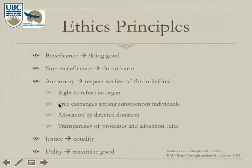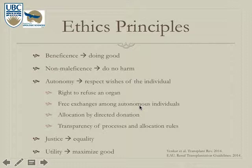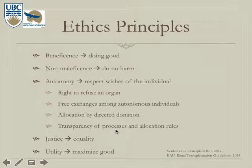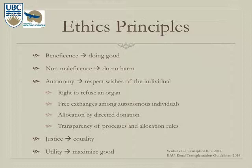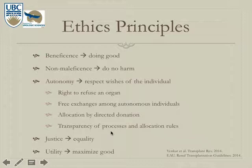Autonomy is a key principle, especially in living donation. Recipients can refuse an organ if they wish, and individuals can direct their donation to a specific person. Justice and autonomy sometimes conflict — society may prefer an organ go to a waitlist patient rather than a donor's chosen recipient, as justice requires equal access for all. Utility means maximizing overall good for the population with end-stage renal disease, with donors serving as a tool in that process.